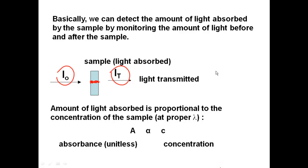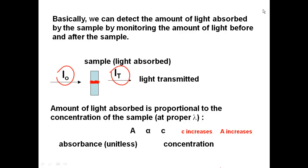The more concentrated the sample is, the more light that's going to be absorbed and the less light that's going to be transmitted. As the concentration increases, the absorbance will increase. We can monitor the concentration of a species by monitoring that absorbance. There's a linear relationship between concentration and absorbance.